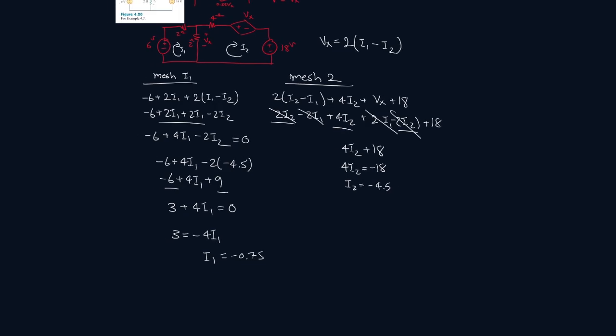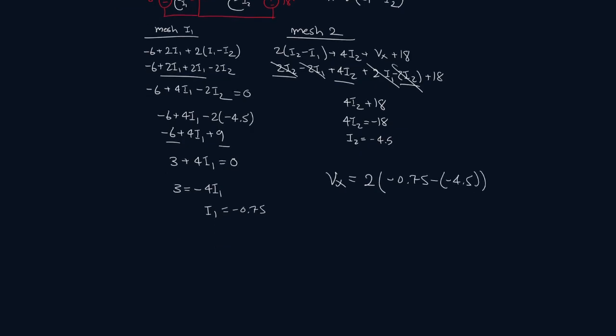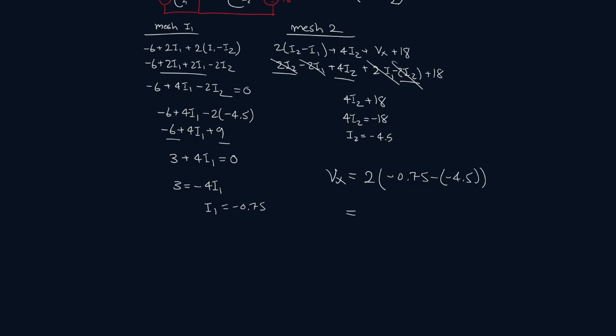Now let's solve for Vx. Vx will be 2. I1 is minus 0.75 minus minus 4.5. So we get, so minus 0.75 minus minus 4.5. That's 3.75 times 2. That's 7.5 volts.